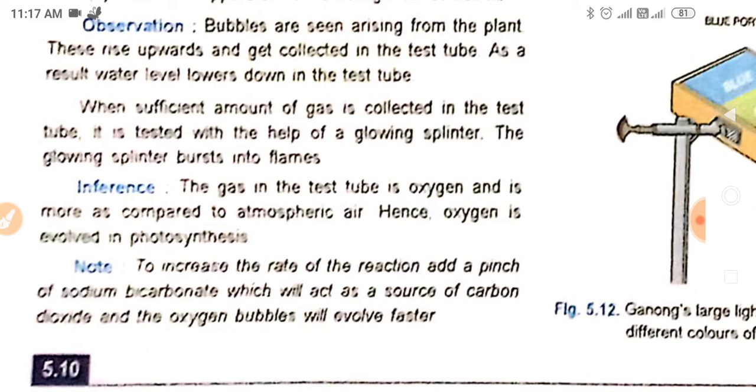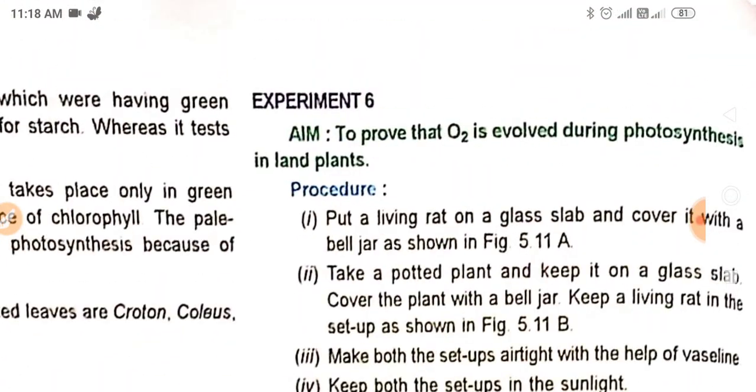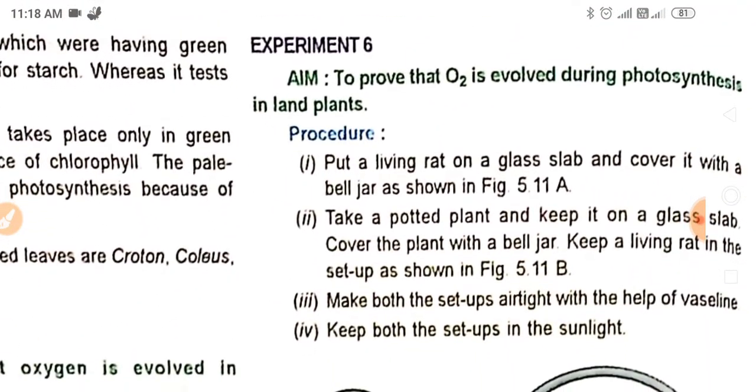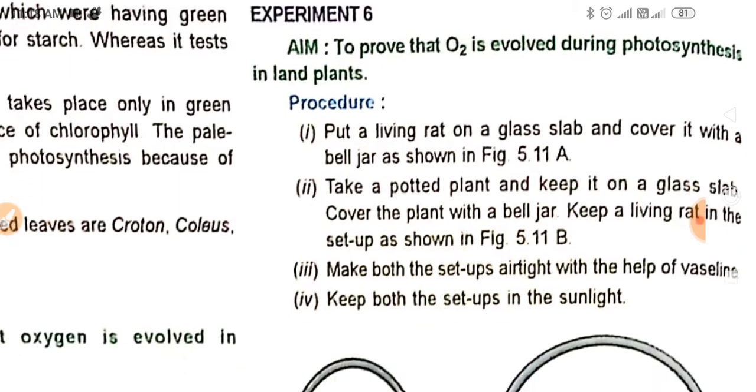If you read the earlier experiment in which we demonstrated that carbon dioxide is necessary for photosynthesis, sodium bicarbonate is put in one beaker and in another beaker just sodium hydroxide. In the beaker with sodium bicarbonate, the process of photosynthesis takes place. Here's another experiment to prove that oxygen is evolved during photosynthesis in land plants also. First, we saw aquatic plants; now we read about land plants.